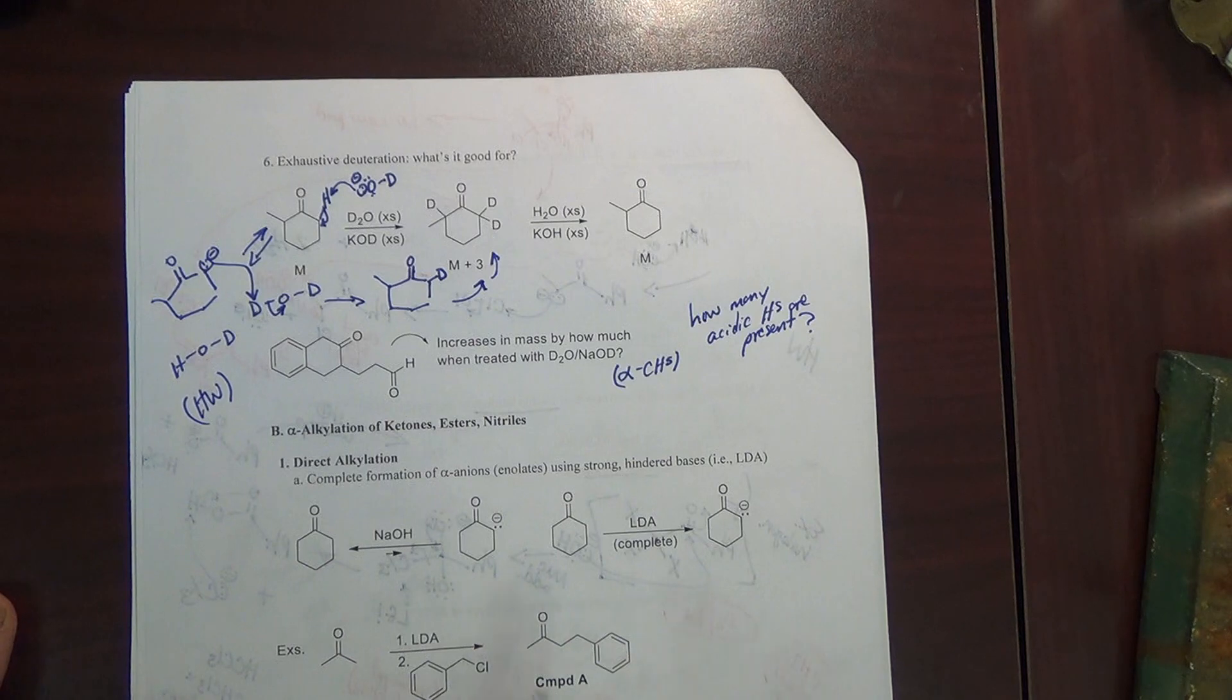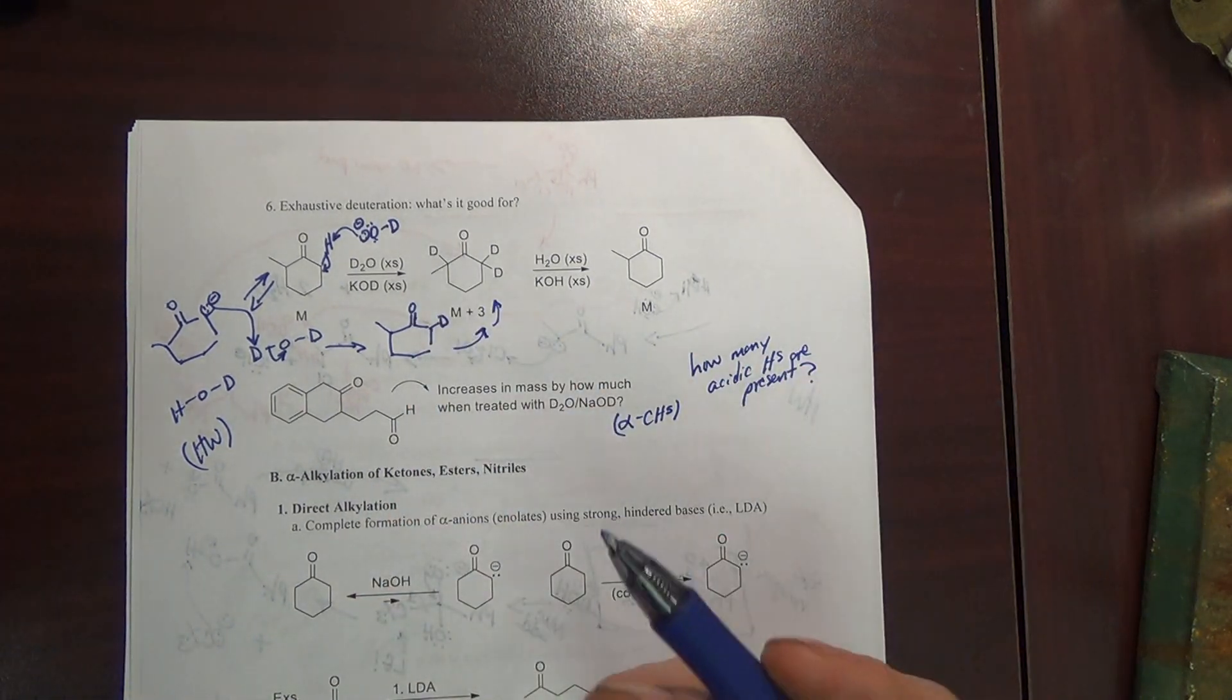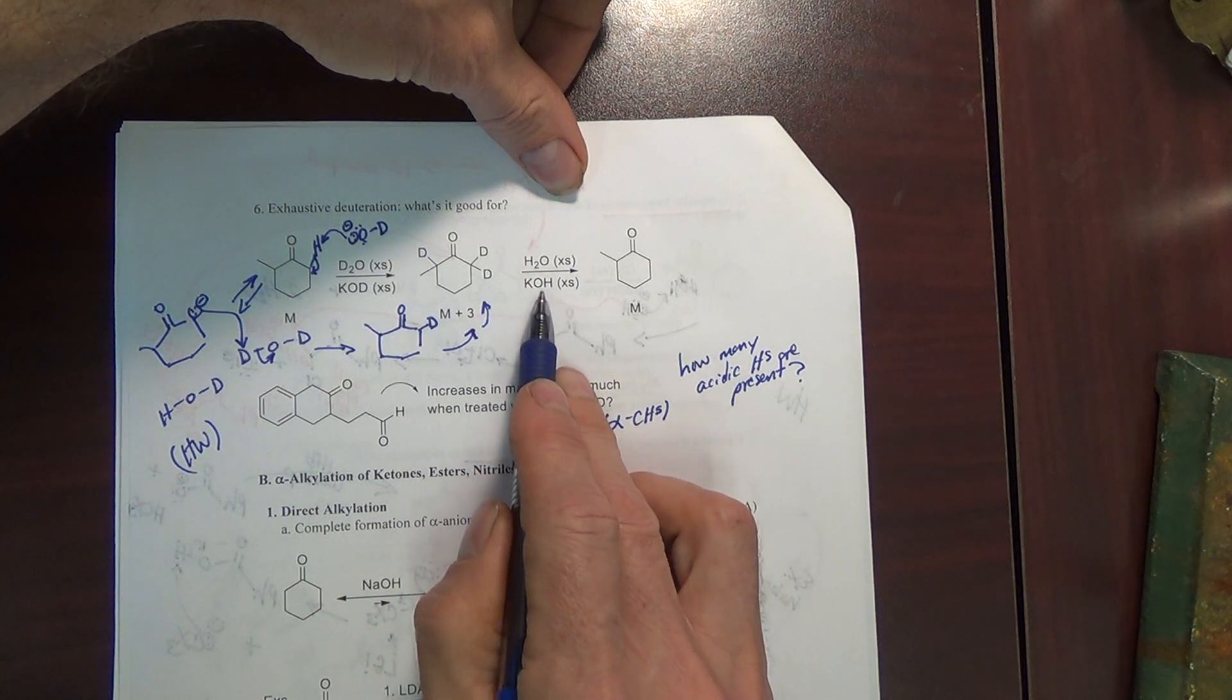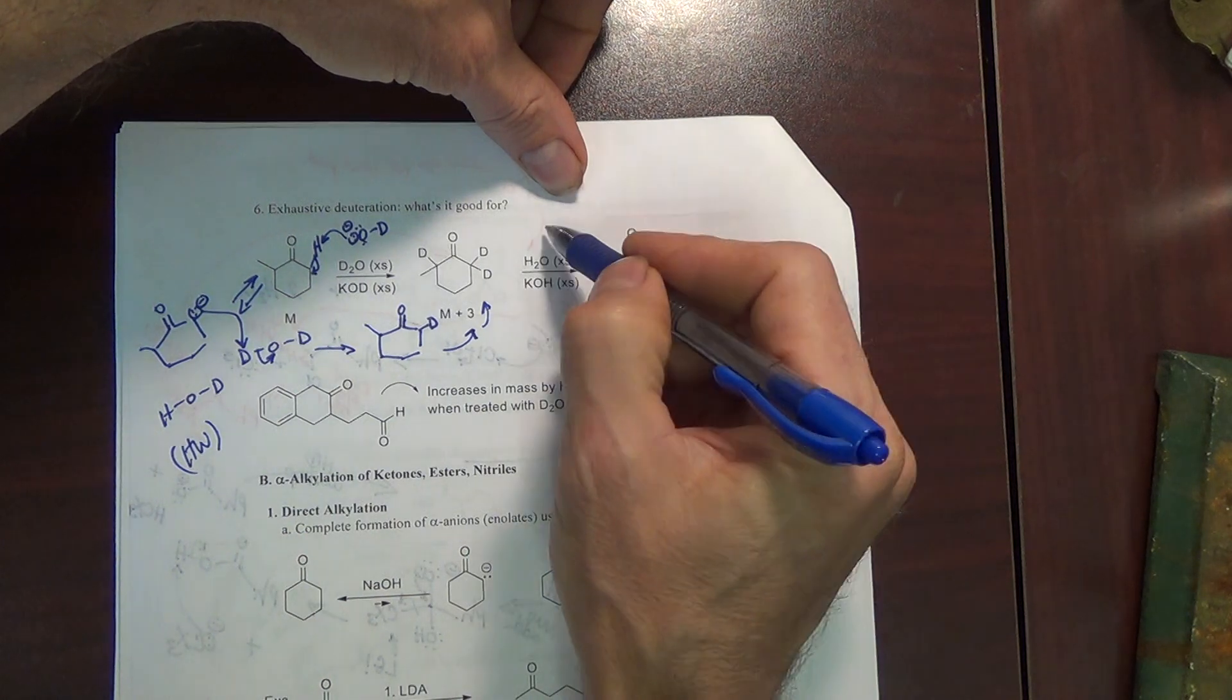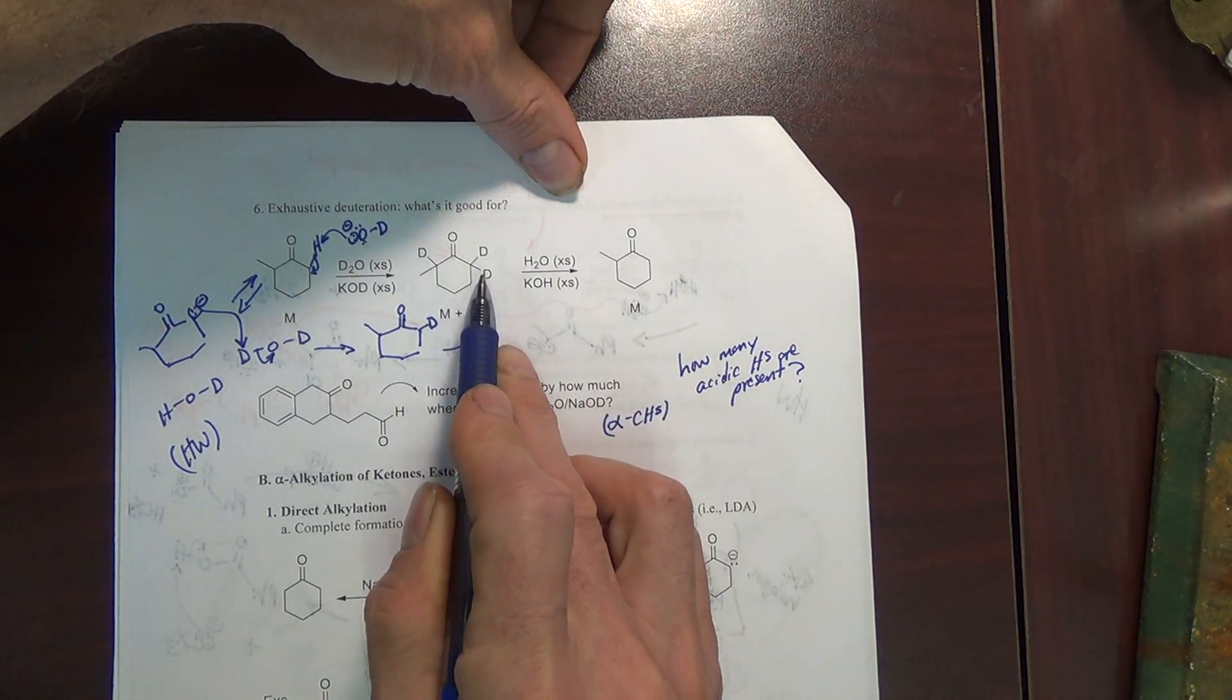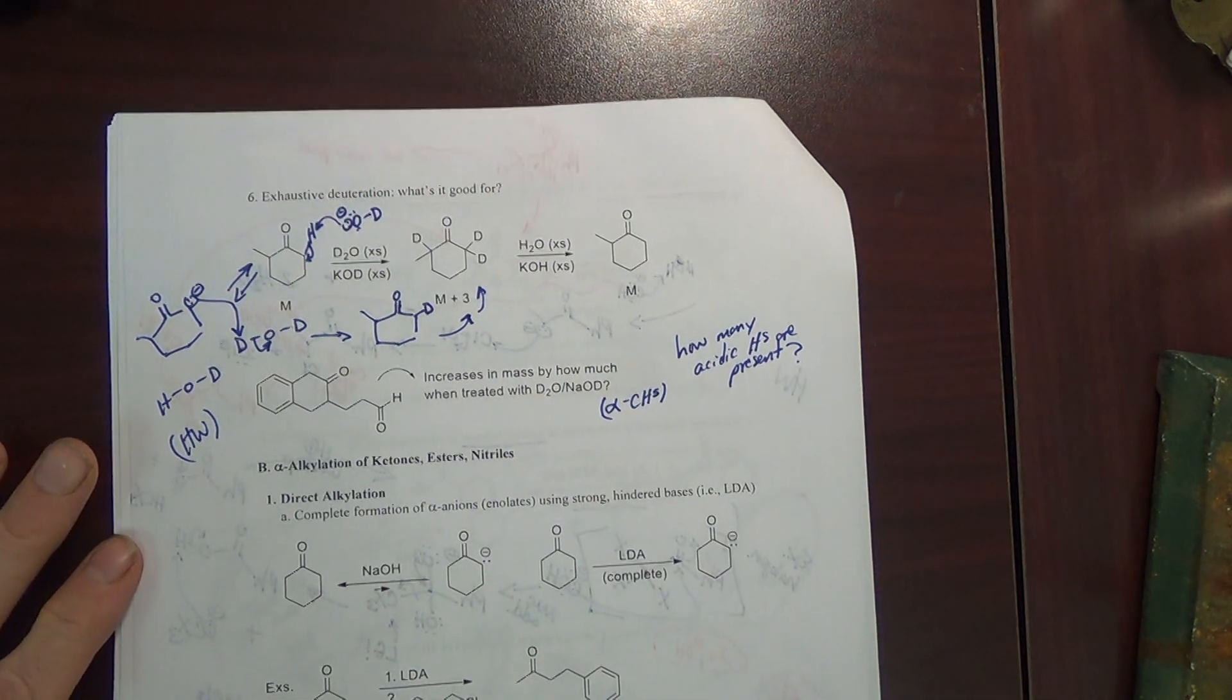That's one reason you might want to do an exhaustive deuteration. You could do this on a small sample and then put the sample into the waste container. If you wanted to get it back, you could come and treat the molecule with regular water and regular KOH and replace each D back with H's. Hydroxide takes D, makes the enolate, and then the enolate with excess water takes an H, much less likely to take a D from the HOD that was formed initially. So you flood it with H2O to get back the H's on.